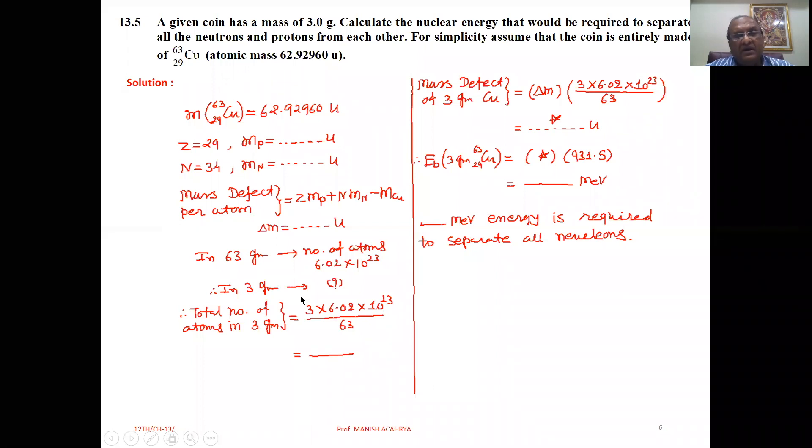Therefore, in 3 grams, the total number of atoms is 3 times 6.02 times 10 raised to 23 divided by 63. So you will get the total number of atoms.